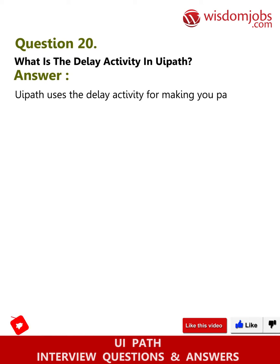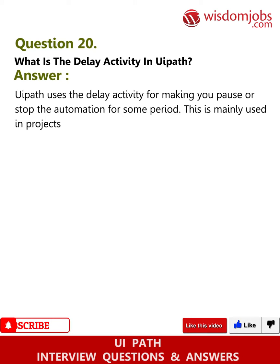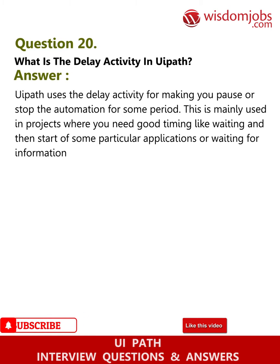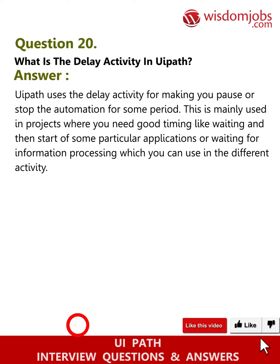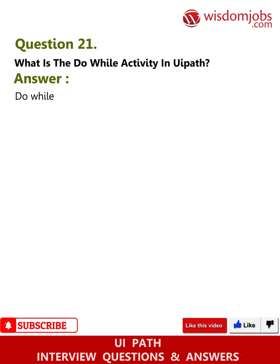The Delay activity is mainly used in projects where you need good timing, like waiting for the start of some particular applications or waiting for information processing, which you can use in different activities. Question 21: What is the Do While activity in UiPath? Answer: Do While helps in enabling the program to execute a specific part of an automation when the condition is true.